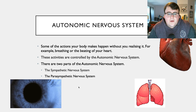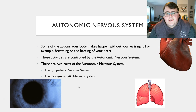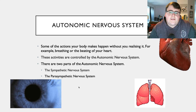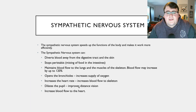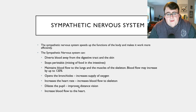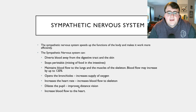The autonomic nervous system is broken up into two different parts: the sympathetic nervous system and the parasympathetic nervous system. The sympathetic nervous system is the part of your nervous system that will speed up your body and make it more efficient. The way to remember that is that sympathetic starts with S and so does speed — so S, sympathetic, speeds up the body's functions.